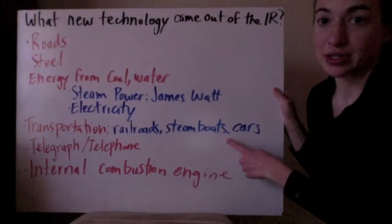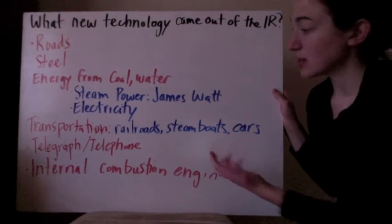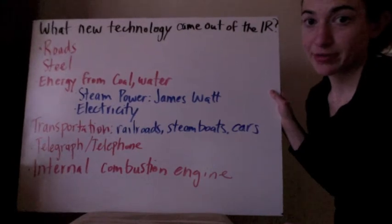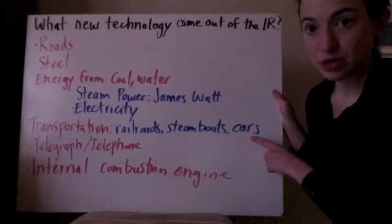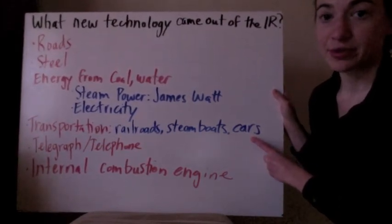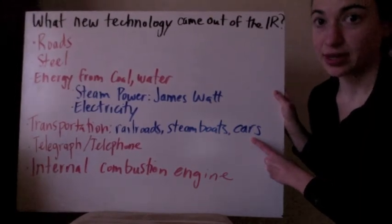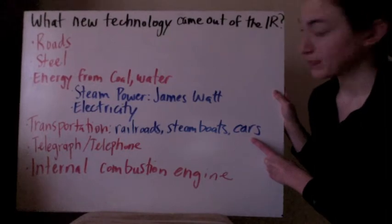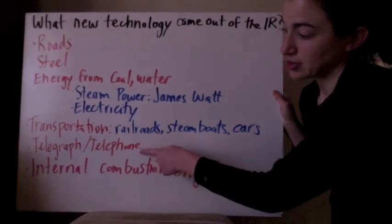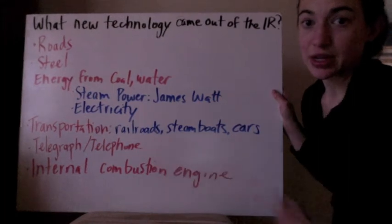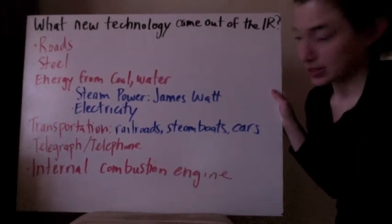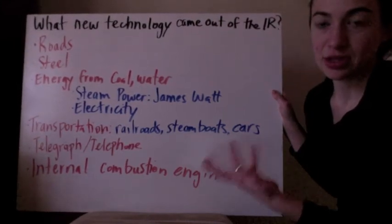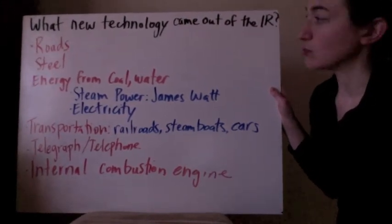There was also better transportation to move goods. Railroads began, steamboats were steam-powered from James Watt's engine, and even cars came out of this. Henry Ford, who created the Ford company — which still exists today — used the assembly line idea to make cars really quickly. Another advancement was the telegraph and telephone to exchange ideas. The final development was the internal combustion engine, which allowed things to run a lot more smoothly.